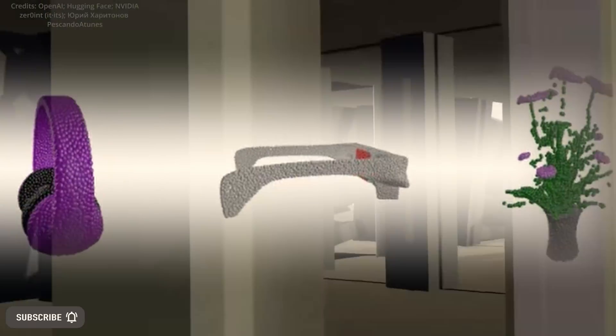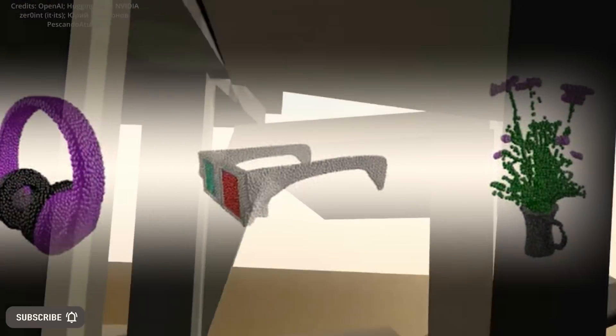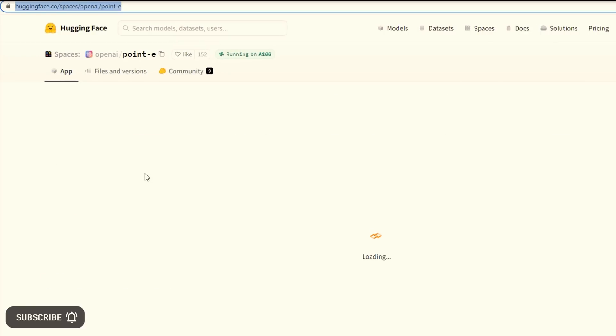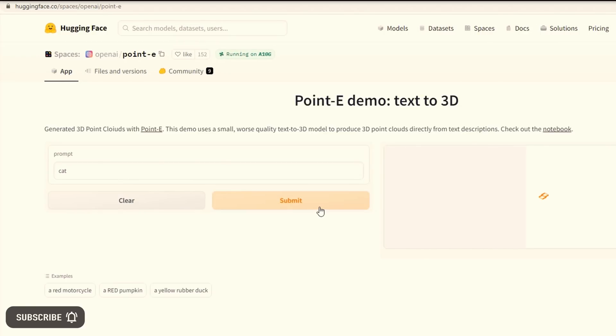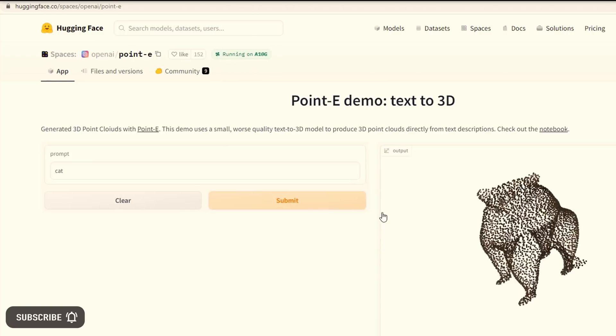In conclusion, Point E from OpenAI has the potential to revolutionize the field of graphics and 3D printing by efficiently generating 3D point cloud models from text prompts.